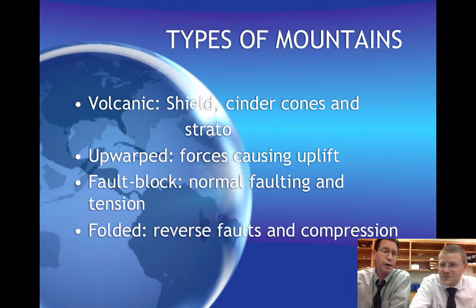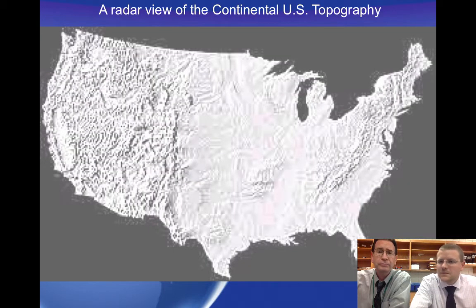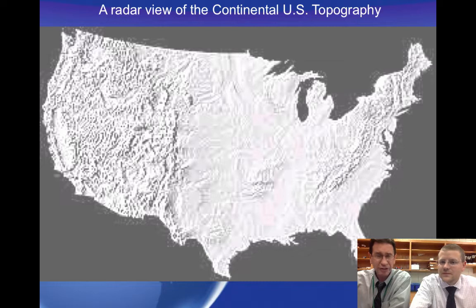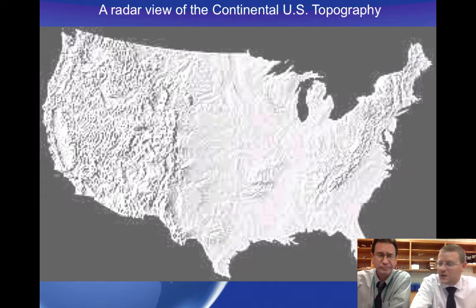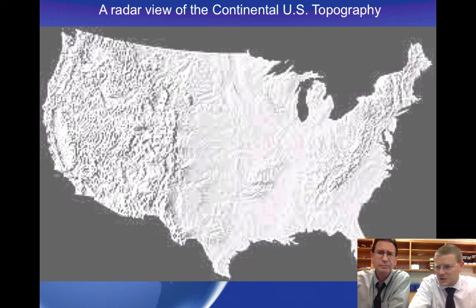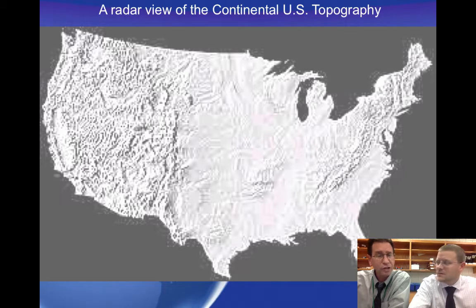Volcanic, upwarped, fault block, and folded mountains. What we see here is a geomorphic picture of the United States, which basically shows you all the vegetation stripped off and only shows the mountain chains. You can see definitely in the middle of the country there aren't any mountains — there's a little plateau region in the center. Over where we live in Pennsylvania, we are dealing with a mountain range, and definitely over in the west there are a lot of different mountain ranges. So the question is, where are we going to find each of these types of mountain ranges across the United States?